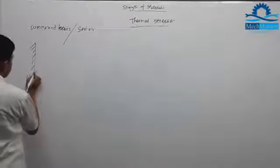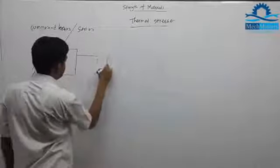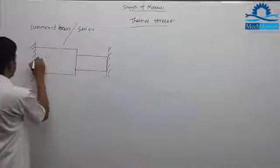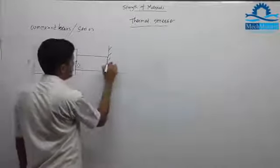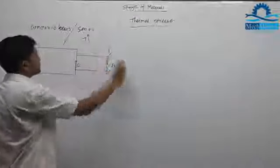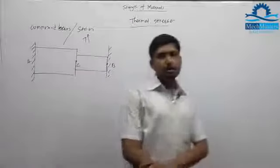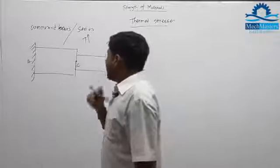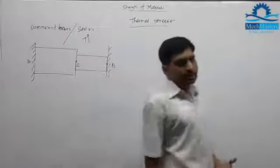We are having two bars fixed at both ends. Let us call this point A, this point C, and this point B. We have given an increase in temperature — we are heating this bar and the change in temperature is T degrees centigrade.